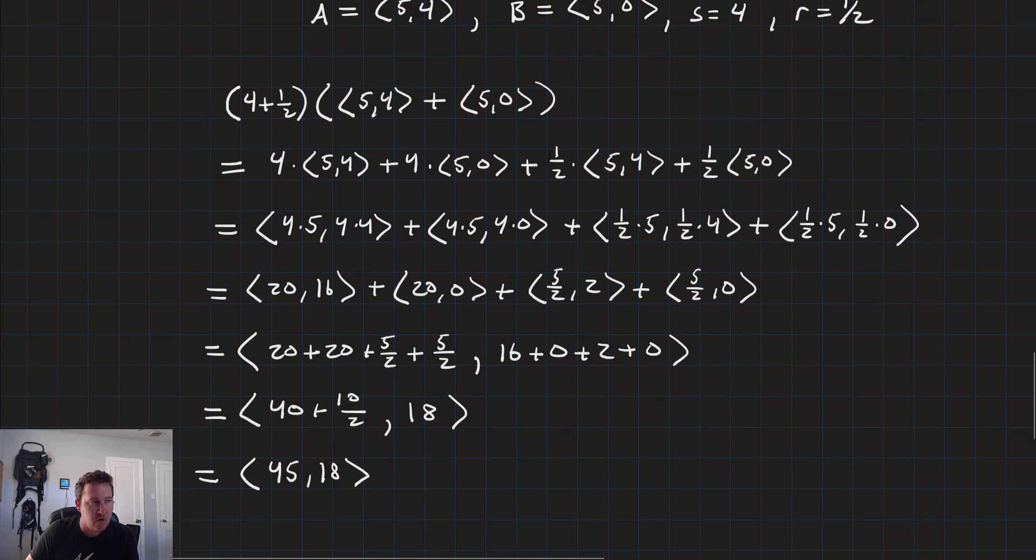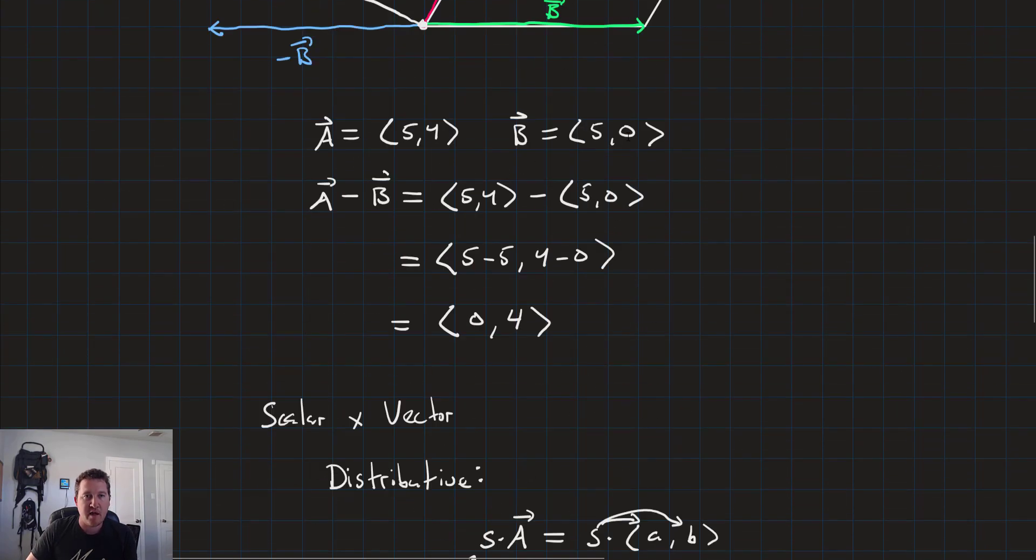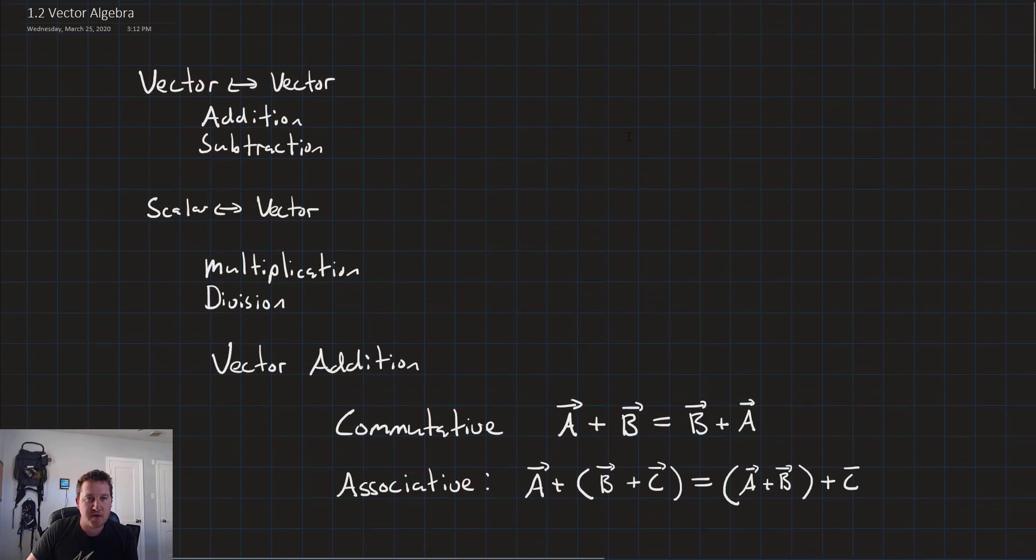So that is all there is to it with vector algebra. Like I said, basically the same as regular algebra, just got to pay attention to a few little details along the way. And remember that when talking about arithmetic with vectors, when it's vector on vector, we're going to be doing addition and subtraction. And when it's scalar on vector, that's multiplication and division. We have other mechanisms to approximate and act like multiplication and division for vectors, and we'll talk about those later. So as always, if you have any questions, please let me know. And if not, I'll see you guys in the next lesson.